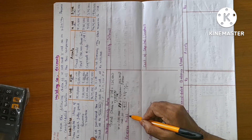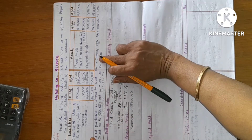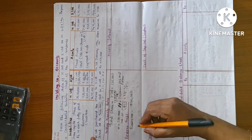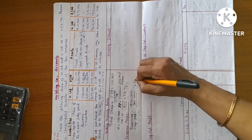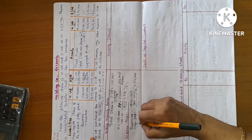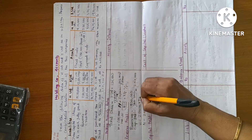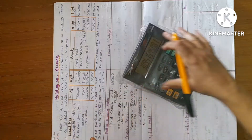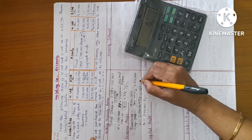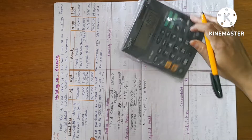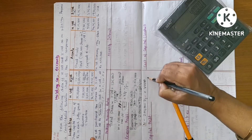Now, revenue profit. Total reserves of S-Limited: 5 lakh. Reserves at the date of acquisition were 3 lakh, so revenue profit is 2 lakh. Holding company share: 2 lakh into 4/5 = 1 lakh 60,000. Minority share: 2 lakh into 1/5 = 40,000.